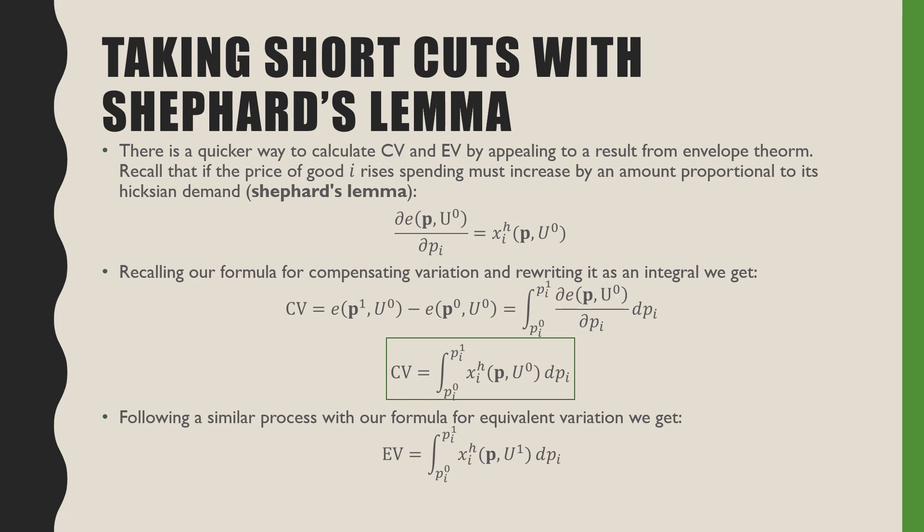There's a quicker way to compute these by appealing to the envelope theorem. Recall that if the price of good i rises, spending must increase by an amount proportional to the Hicksian demand — this is called Shepherd's Lemma. Rewriting our compensating variation formula as an integral, CV equals the integral of Hicksian demand evaluated at prices p and utility u0, where prices go from p0 to p1 for good i.